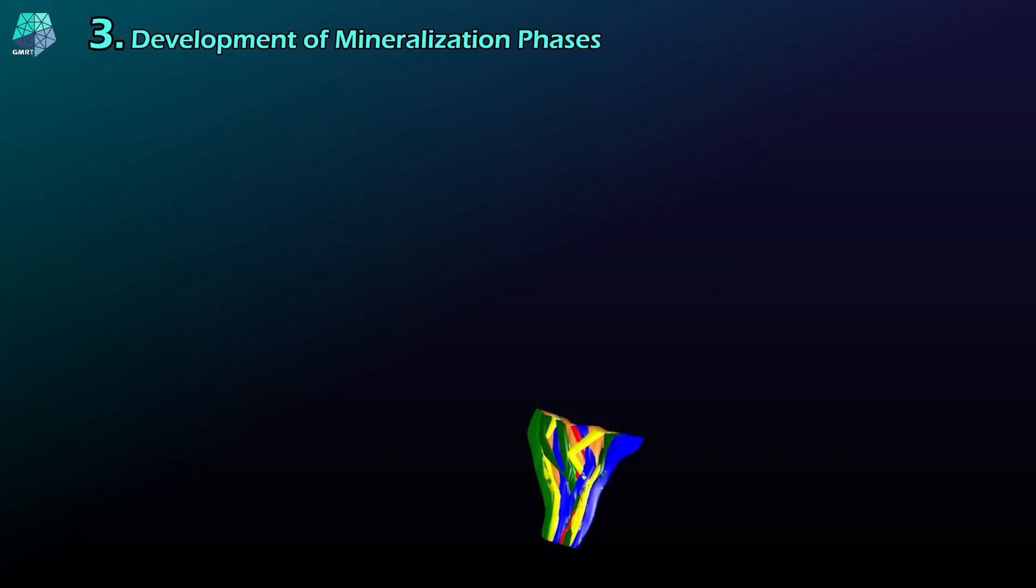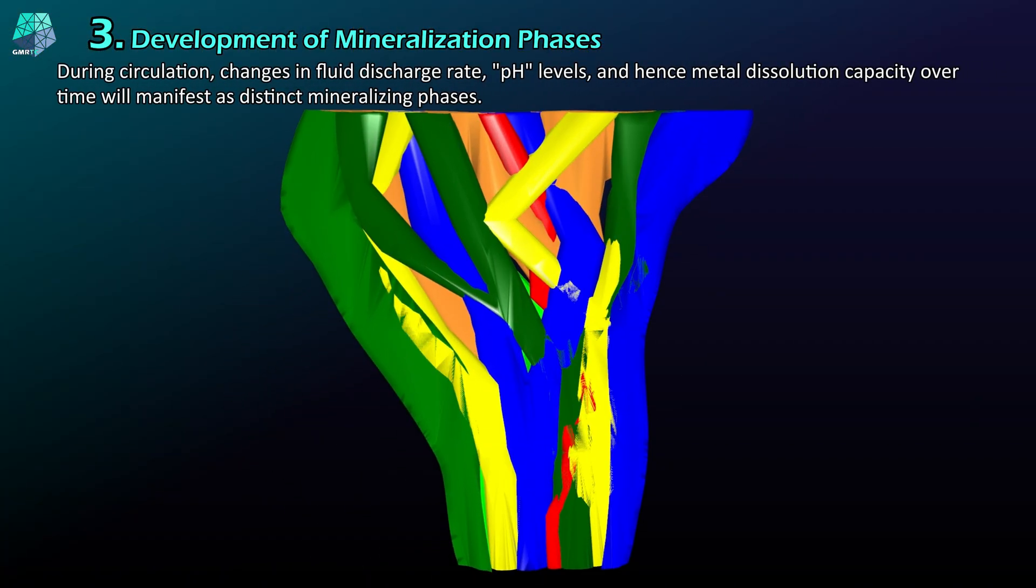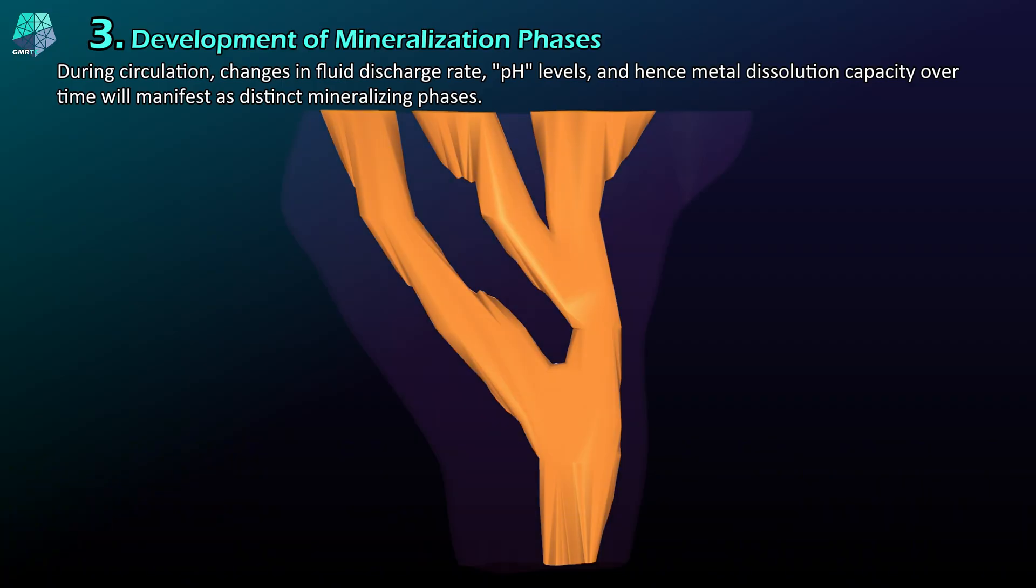During circulation, changes in fluid discharge rate, pH levels, and hence metal dissolution capacity over time will manifest as distinct mineralizing phases.